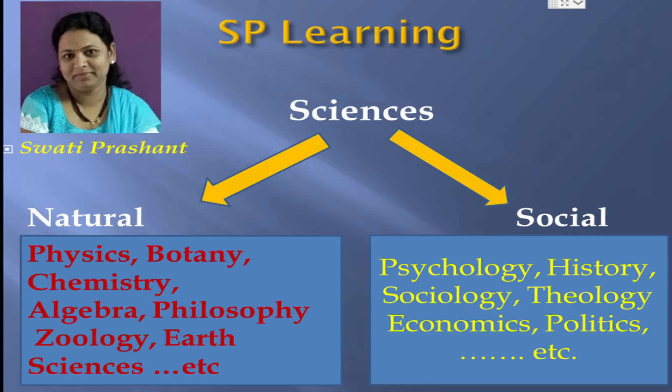Social sciences are behavioral sciences. They study human society, social relationships, social structure or social system — like economics, psychology, history, sociology, political science, etc. Economics is a social science.